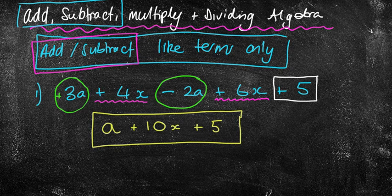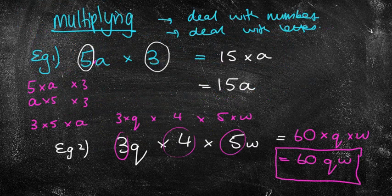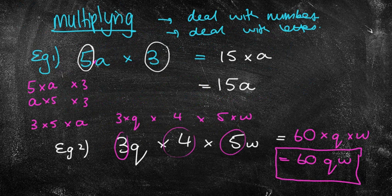But if you're timesing, then it's okay. Timesing is much easier. We just deal with the numbers first and the letters the same as the division.